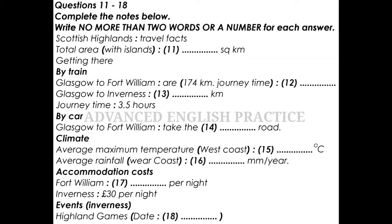Obviously, the temperatures will be lower inland and on higher ground. You can expect it to rain a lot too, particularly in the west, where annually as much as 2,000 millimetres regularly falls, though this helps account for the rich variety of vegetation and wildlife.